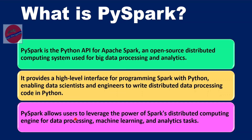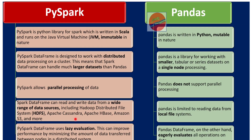Now that we understand what Pandas and PySpark are, let us walk through the differences between them. The first difference is that PySpark is a Python library mainly used for the Spark environment — meaning Spark and Databricks projects. Spark is written in Scala and runs on the JVM virtual machine, following Spark architecture, which means it is immutable in nature. Pandas, on the other hand, is a Python library written in Python and is mutable in nature.